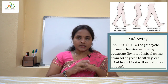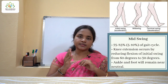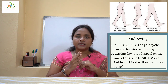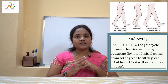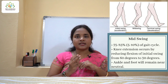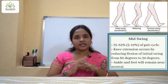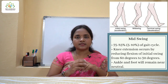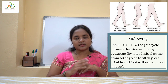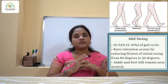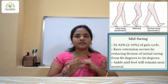The next is the mid swing phase, which contributes to around 75 to 85% of the remaining 40% of the gait cycle. It starts with acceleration and stops at the deceleration of the leg. In this mid swing phase, the leg comes directly under the body.